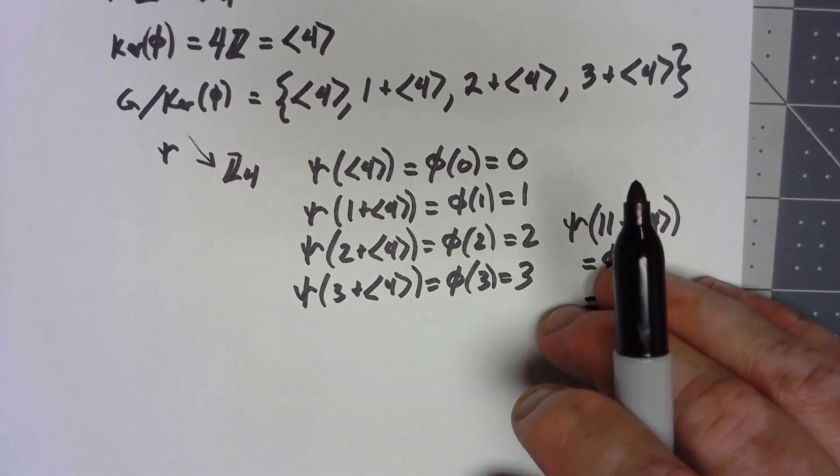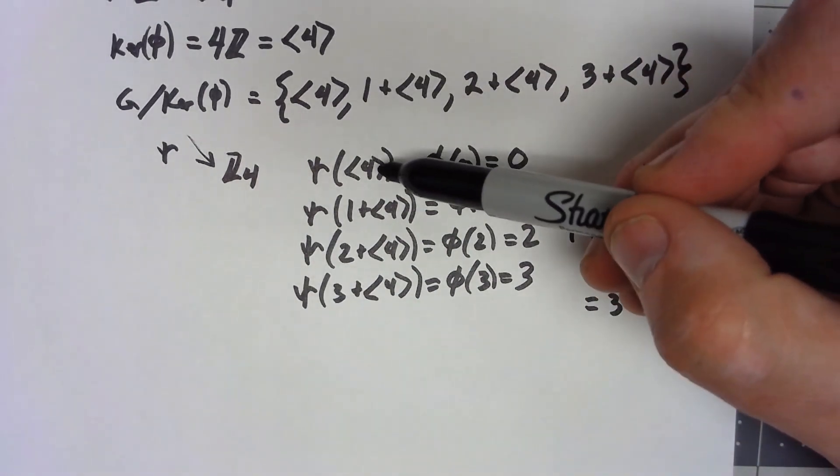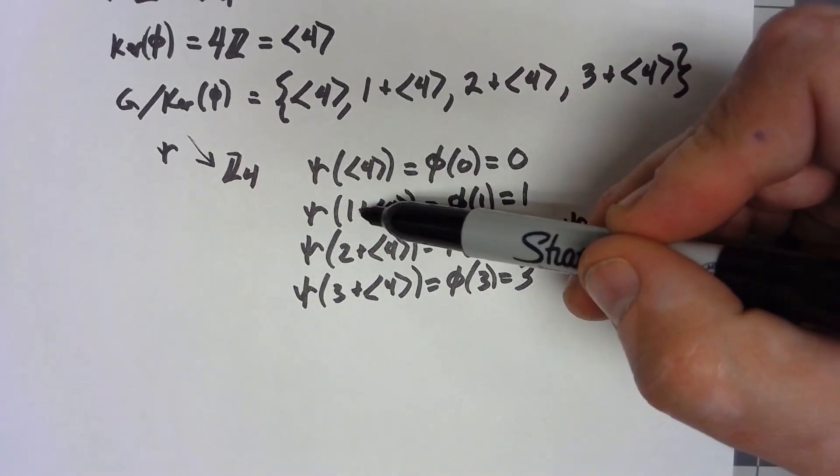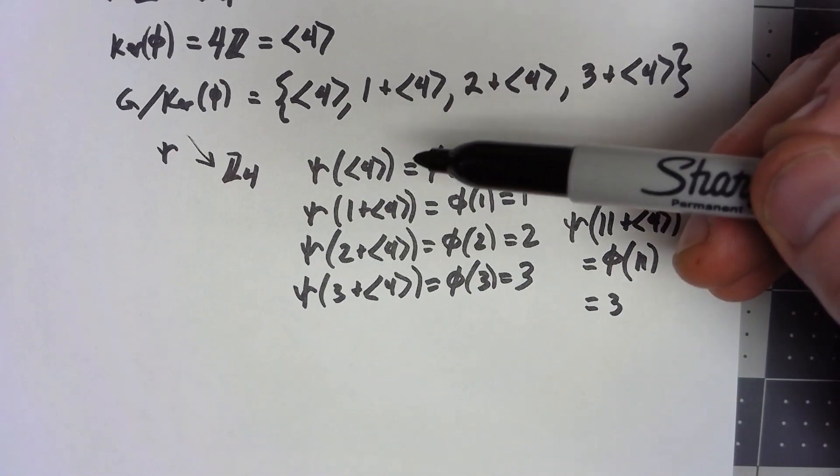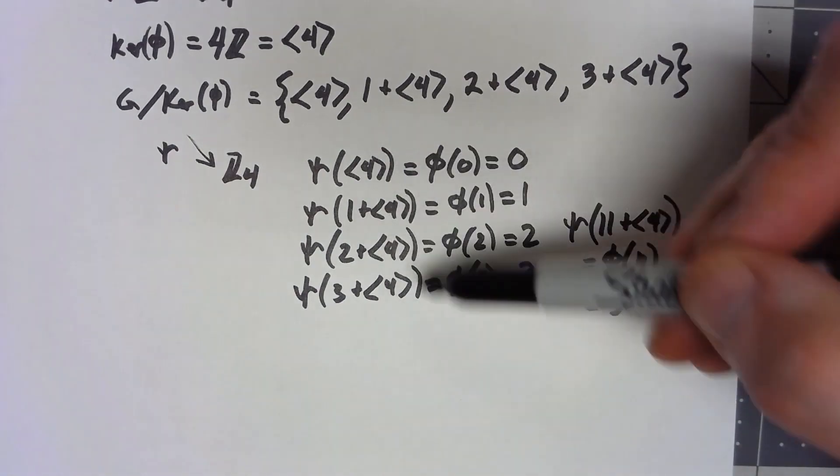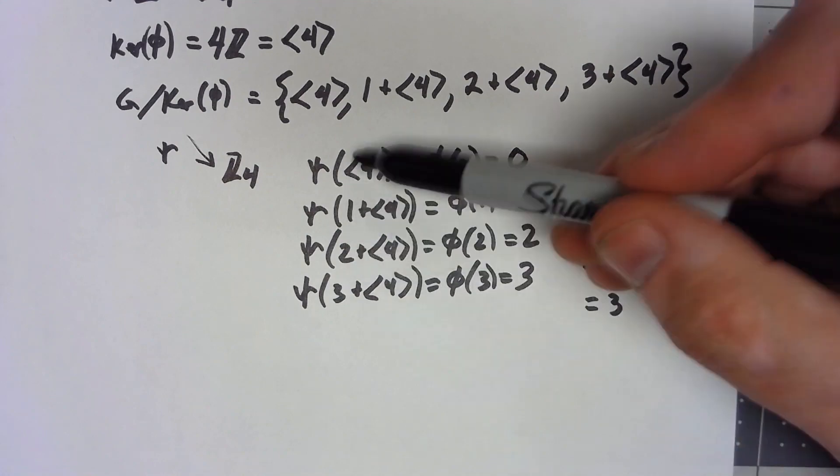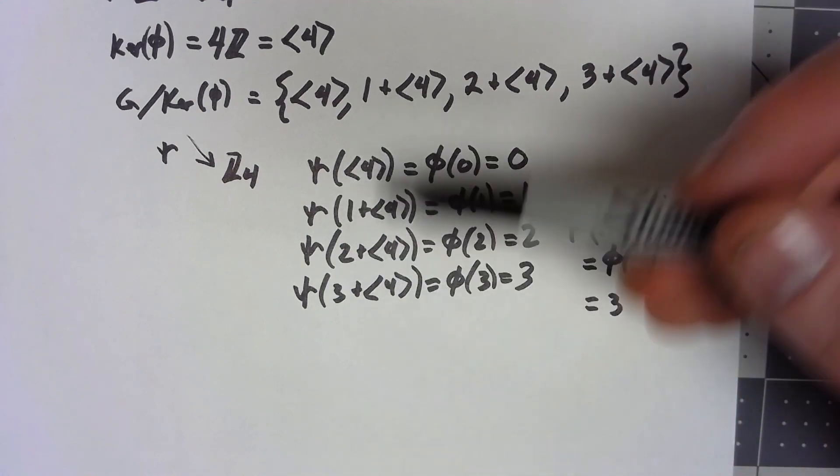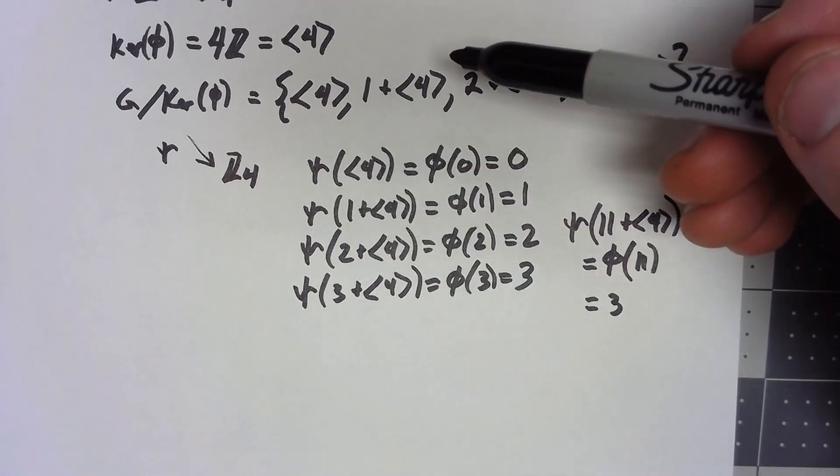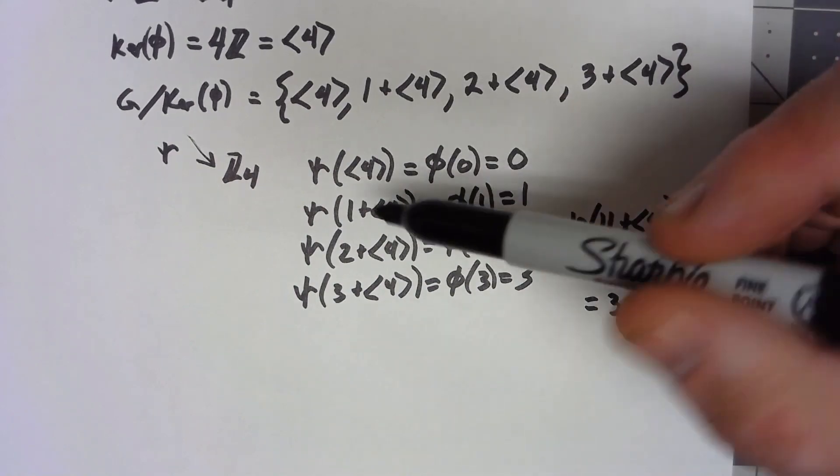And now, it's not hard to see that if I start thinking about these cosets 4, 1 plus 4, 2 plus 4, 3 plus 4, when I start adding those cosets using the adding the operation in front, I'm going to basically get Z4.